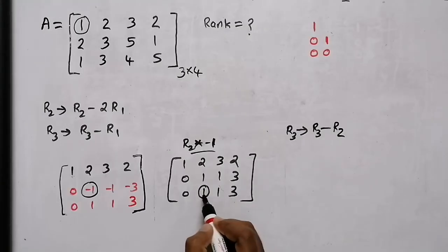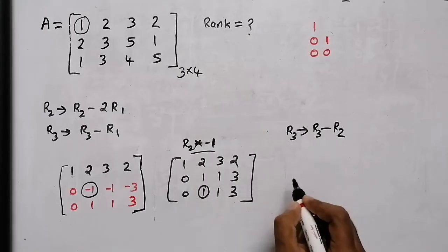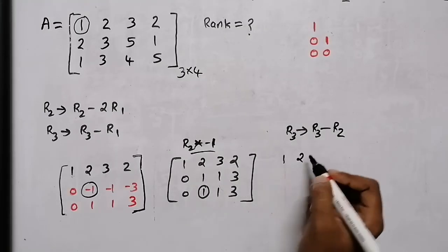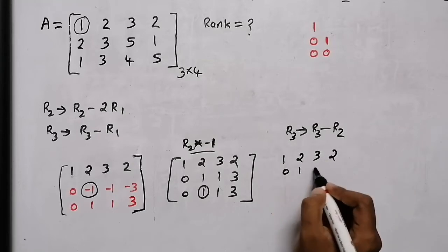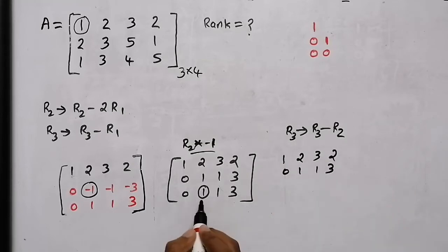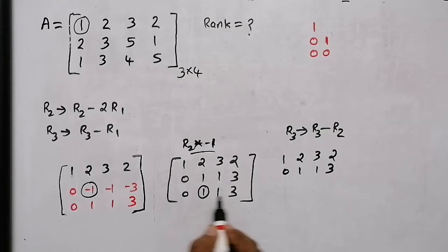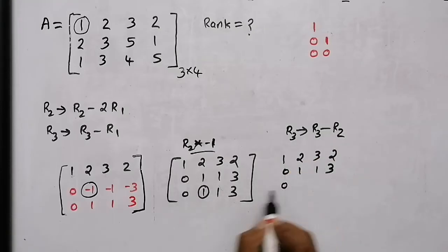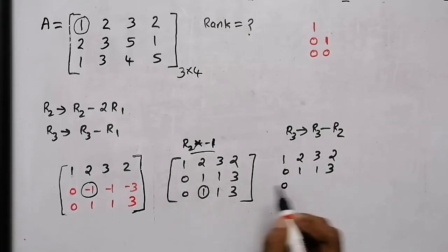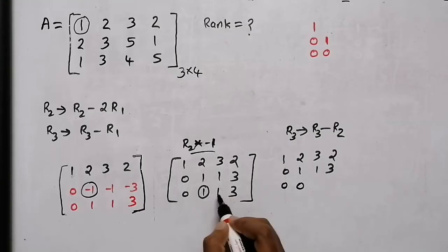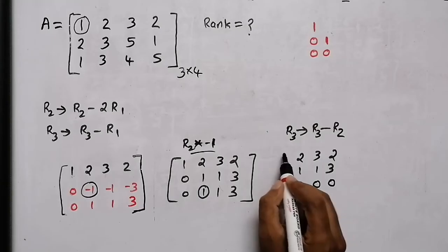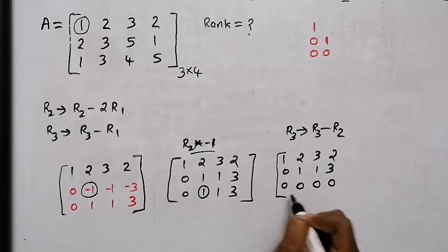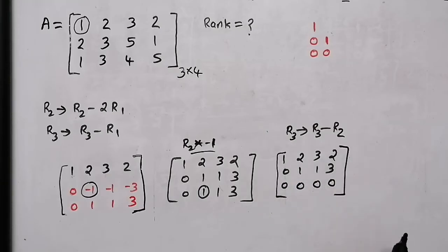1 minus 1. 2nd row. R3 minus R2: 1 minus 1 is 0, 0 minus 0 is 0, 1 minus 1 is 0, 3 minus 3 is 0. That's the matrix.